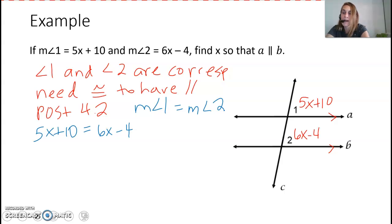So 5x is a positive 5x. To move it, we would need to subtract 5x. 5x minus 5x is going to be 0. 5 minus 5 is 0. And whatever we do to one side, we have to do to the other side. 6x minus 5x would be 1x or just x.